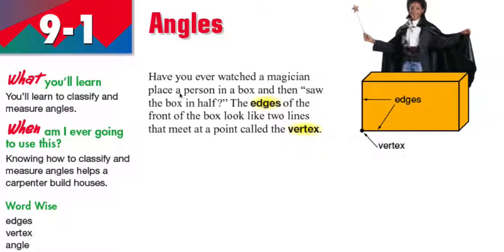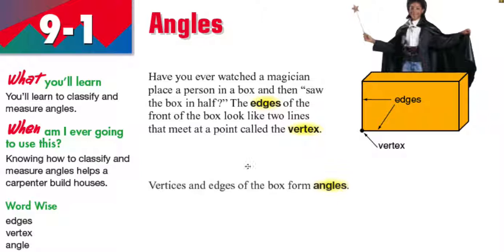Have you ever watched a magician place a person in a box and then saw the box in half? The edges of the front of the box look like two lines that meet at a point called the vertex. So this is your vertex right here, and these are the edges of your box. The vertex is where the two edges meet. When you talk about the plural of vertex — more than one vertex — it's called vertices.